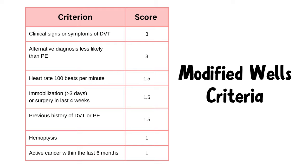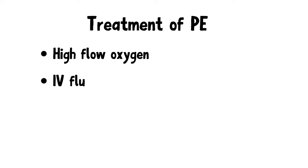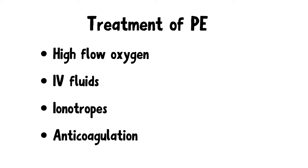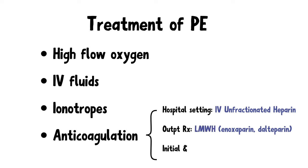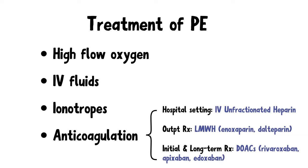Now let's move on to treatment of pulmonary embolism. Management includes high-flow oxygen, intravenous fluids, inotropes, and anticoagulation. You can anticoagulate with IV unfractionated heparin in the hospital setting. Low molecular weight heparins like enoxaparin and dalteparin are commonly used for outpatient treatment. Direct oral anticoagulants such as rivaroxaban, apixaban, and edoxaban can be used for initial and long-term treatment.